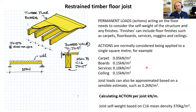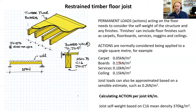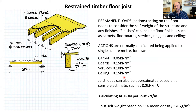We need to consider permanent loads. Taking the action of timber floorboards and joists — a classical floor setup — we think about dead weight. The example is a floor joist. For a domestic-level build-up: carpet, floorboards, services allowance, and ceiling. With joists at 400 or 600 centres, the joist self-weight sums to about 0.2 kN/m².